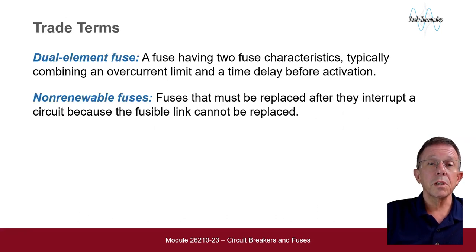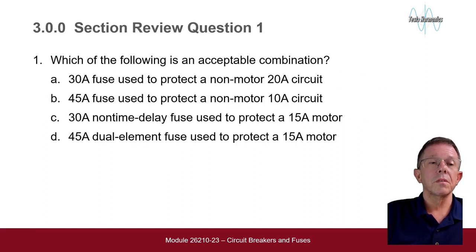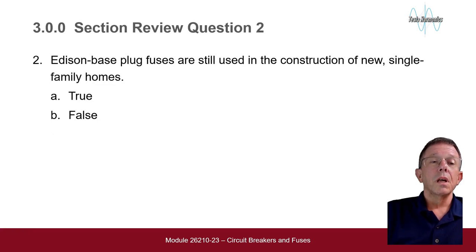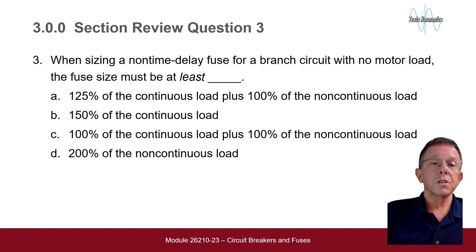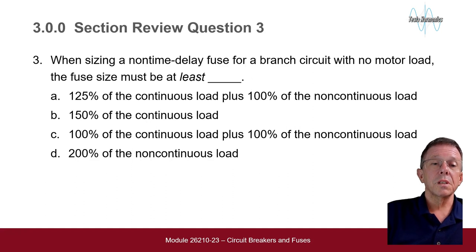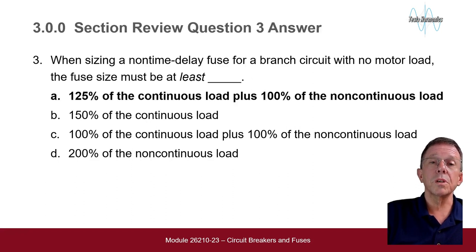Some trade terms you should read over and become familiar with for this section. Review questions: Which of the following is a non-acceptable combination? A 30-amp fuse used to protect a 20-amp non-motor circuit; a 30-amp non-time-delay fuse used to protect a 15-amp motor; or a 45-amp dual element fuse to protect a 15-amp motor. The answer is C — a 30-amp non-time-delay fuse used to protect a 15-amp motor. Edison-base plug fuses are still used in construction of new single-family homes — true or false? That would be false. When sizing a non-time-delayed fuse for a branch circuit with no motor load, the fuse size must be: 125% of the continuous load plus 100% of the non-continuous load. That is the correct answer.